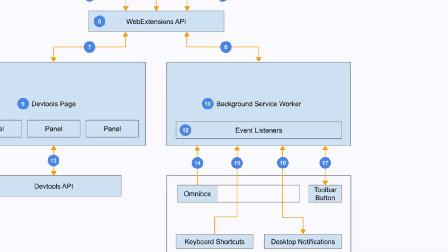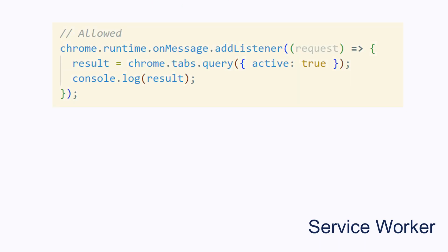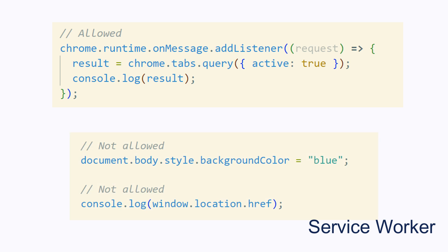The next component is the background service worker. Service workers run in the background and listen to messages from other parts of the extension, and they are allowed to access all Chrome APIs that the extension has permissions for, like tabs or bookmarks. However, they don't have access to the DOM of any web pages, so they cannot read or write anything on the document object, and they cannot access the window object either. They also have no way to display any kind of user interface, so they are most commonly used to relay messages between other parts of the extension, the Chrome APIs, and the backend.